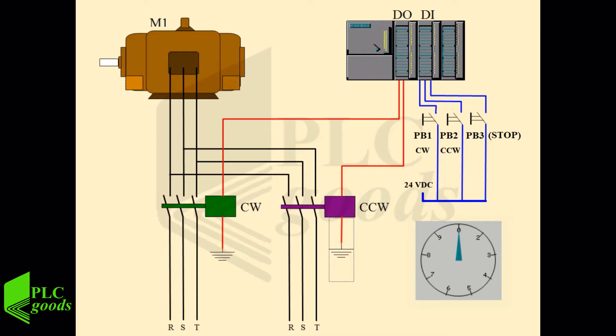In this video, we examine the operation of an electrical machinery systems control panel featuring three push buttons. Depressing PB1 initiates clockwise motion, while PB2 triggers counterclockwise motion. Pressing PB3 stops both outputs.